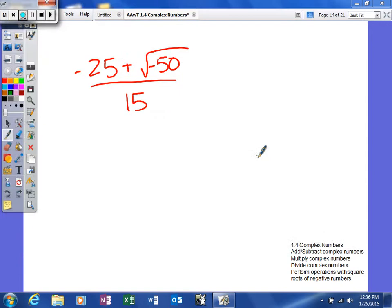Last example here in this 1.4 section. Again, I'm trying to simplify this nice little fraction, but what I need to do first is go ahead and write, since my radicand is negative, I'm going to write it in terms of i.